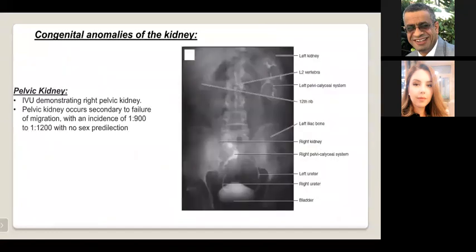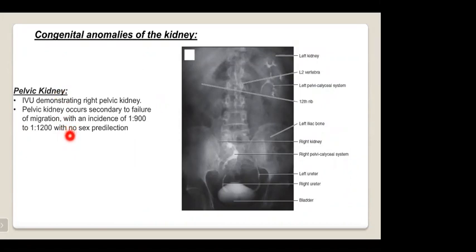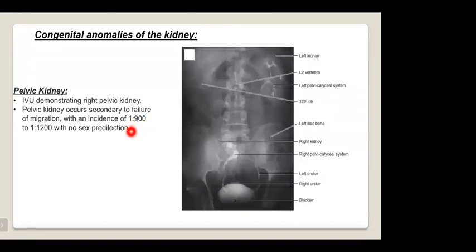Regarding congenital anomalies, a pelvic kidney — also called an ectopic kidney — is a normally functioning kidney present in the pelvis. It occurs secondary to failure of migration during development, with an incidence of one in 900 population, with no sex predilection.